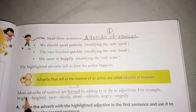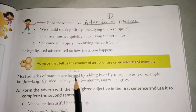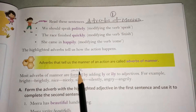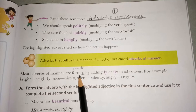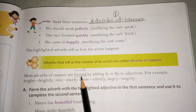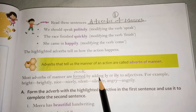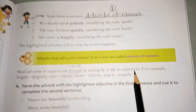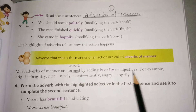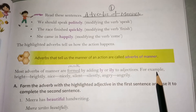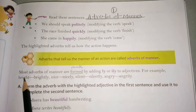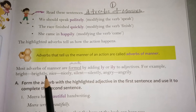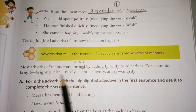Most adverbs of manner are formed — formed means made. Adverbs of manner कैसे बनाते हैं? By adding -ly and -ily to adjectives. For example, bright is an adjective, हमने उसमें ly लगा दिया — brightly.